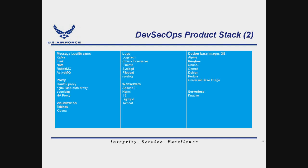We cover message buses like Kafka, proxies, visualization tools, log aggregation tools, and web servers. For the base OS we use Universal Base Image, which is RHEL and does not require a license — we get the trusted supply chain of RHEL RPMs without infringing the license. For serverless and functions, we use Knative instead of Lambda so we don't get locked into Amazon. Knative is abstracted from the cloud provider.